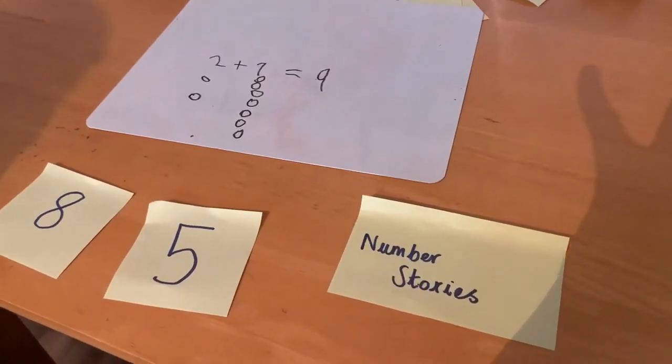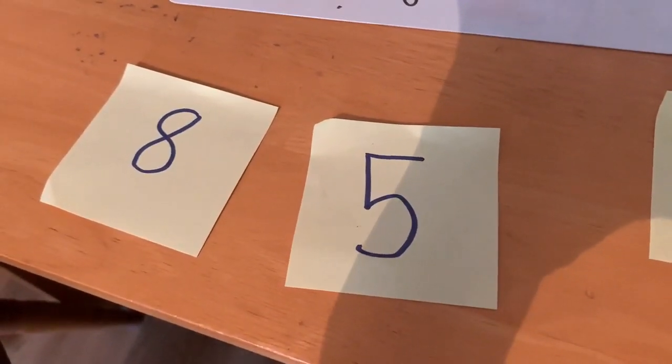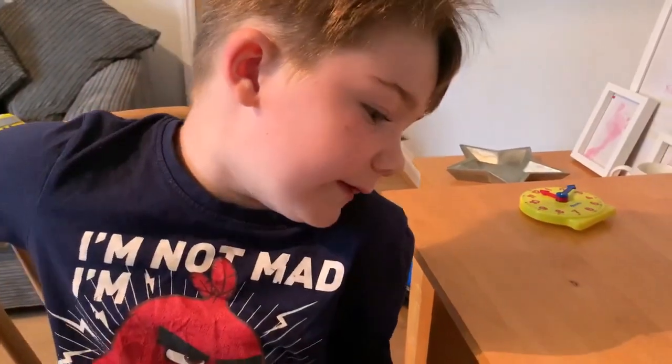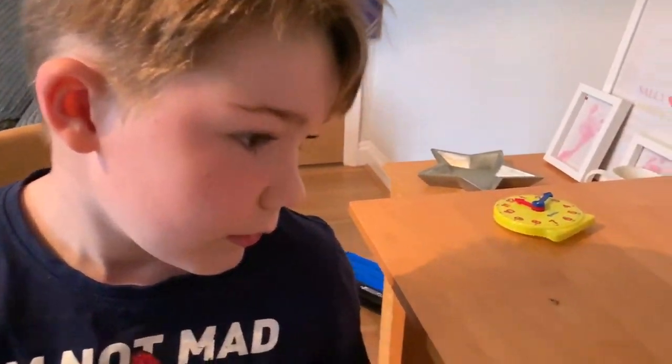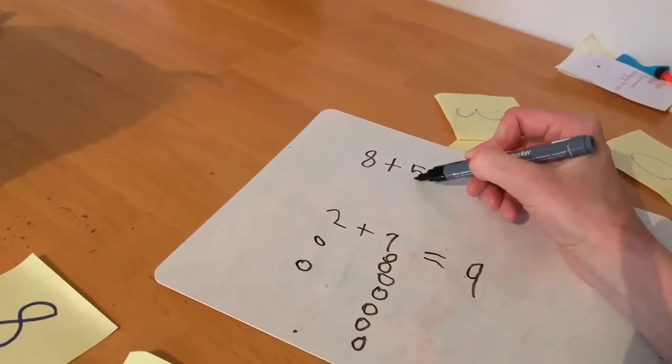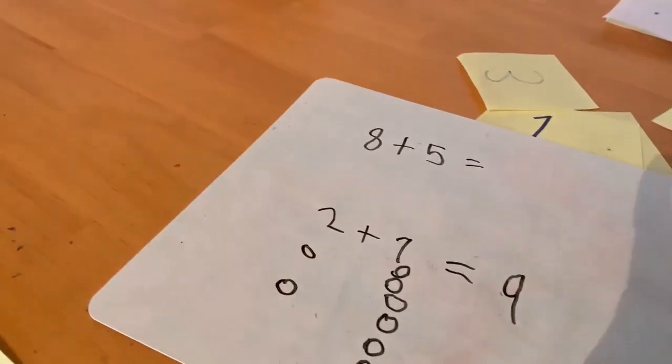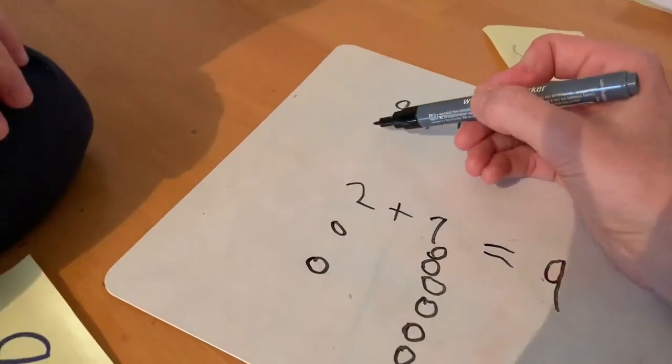Archie, could you make up a number story with these two numbers? What are the two numbers you chose? Eight and five. What's your number story? There were 8 caves and there were 5 caves. So there were 8 caves and another 5 caves. How many caves were there all together? That's what we need to try and work out.